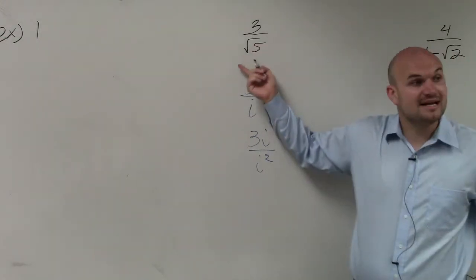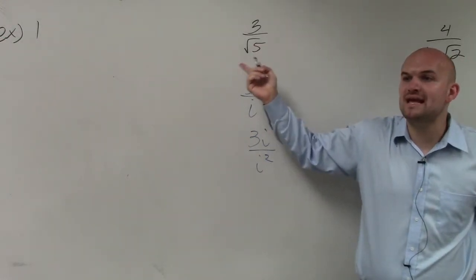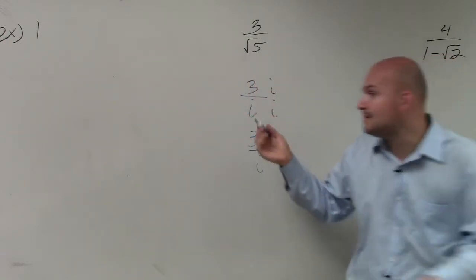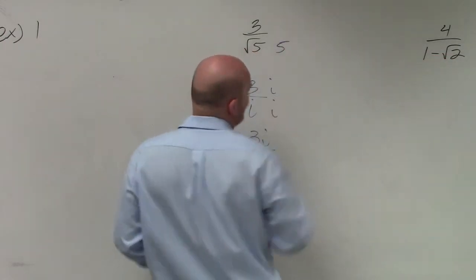So 5 is not a square number. But how could I make 5 a square number? 5 times 5. I could make it to 5 times 5, or 5 squared, right? So I need to be able to multiply it by 5.